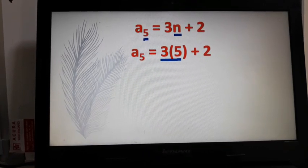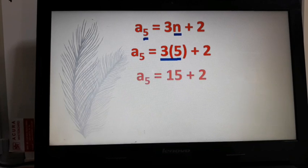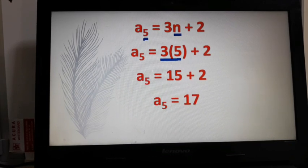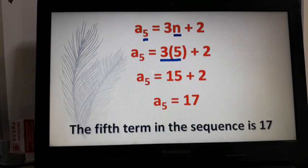So multiply first 3 and 5, that will give us 15. Plus 2 will give us 17. So our fifth term is 17.